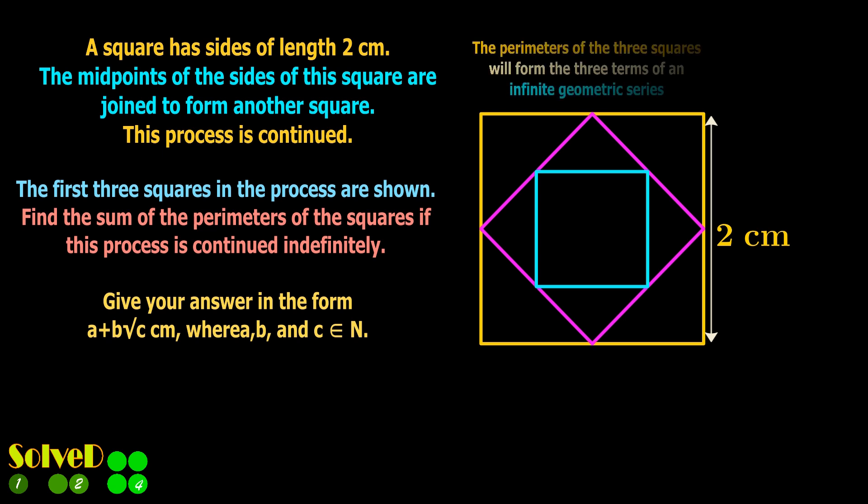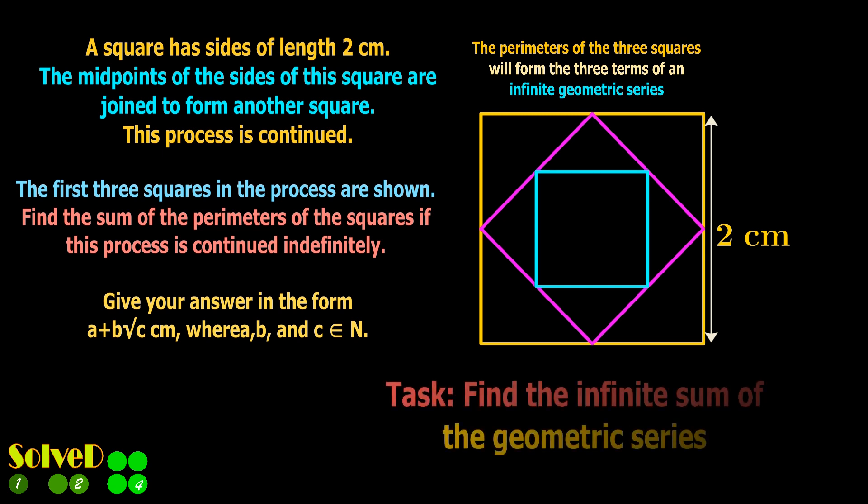The sequence of the perimeters of the given squares results in a geometric series. So, in other words, the task becomes finding the infinite sum of a geometric series.